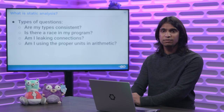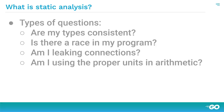So the types of questions that you might want to ask about a program: are my types consistent? So if I declare a variable of type int and I try to concatenate it to a string, that's going to have inconsistent typing, and your Go compiler will complain about that.